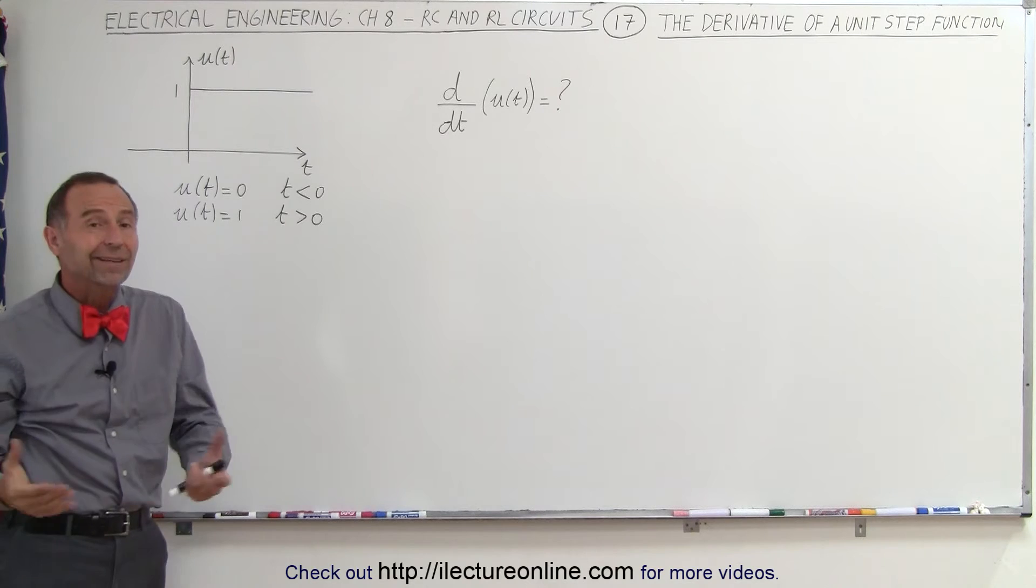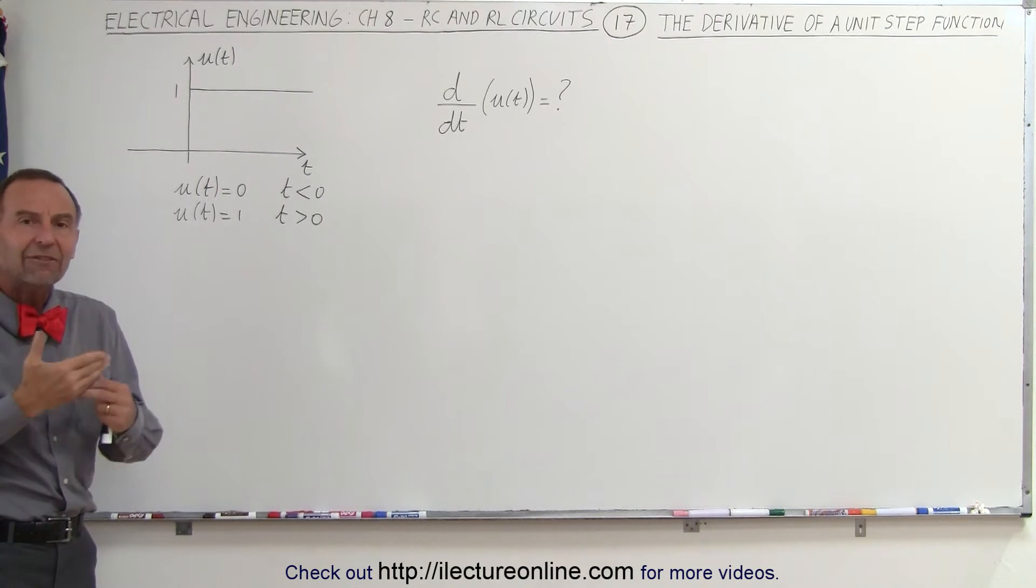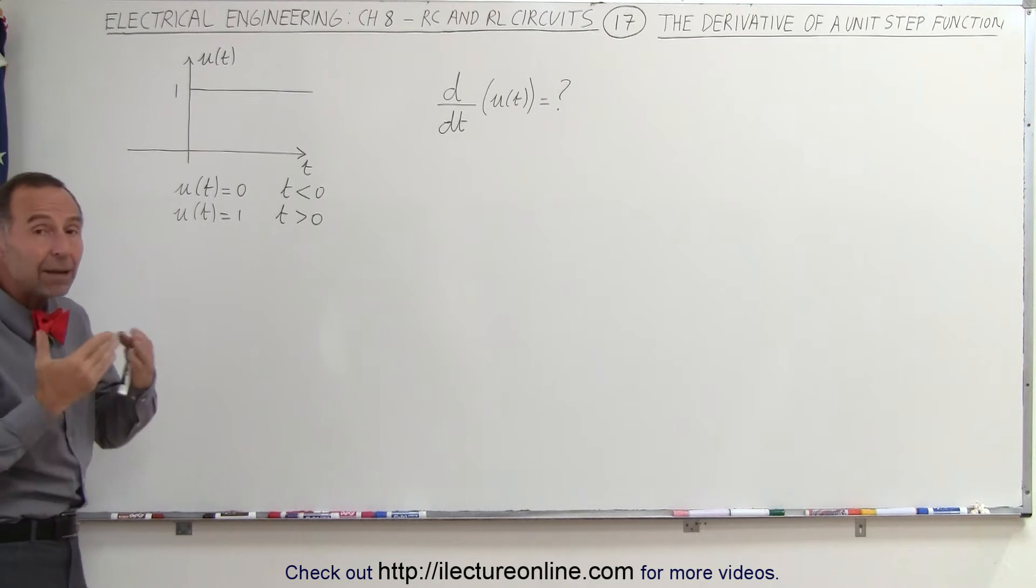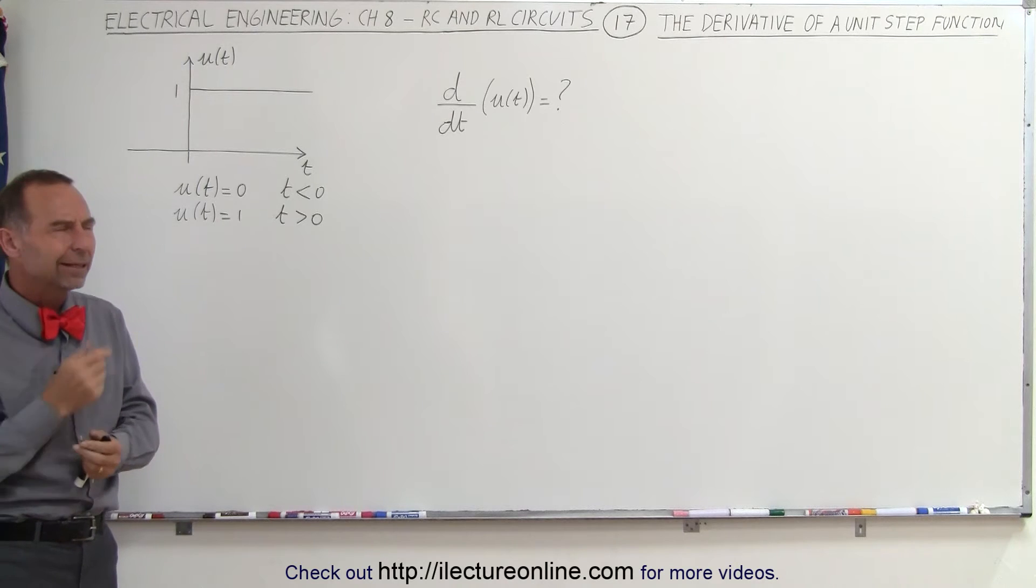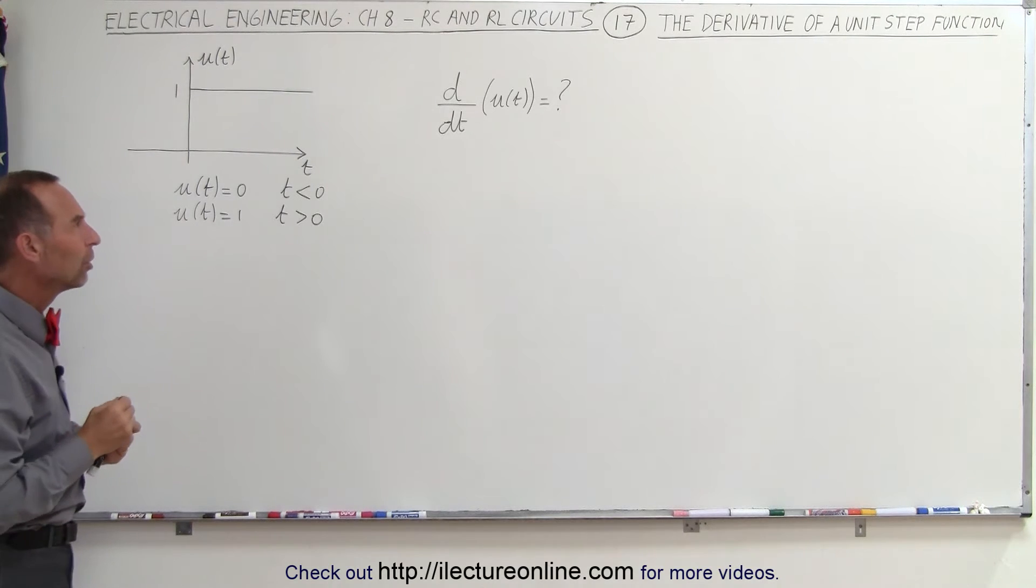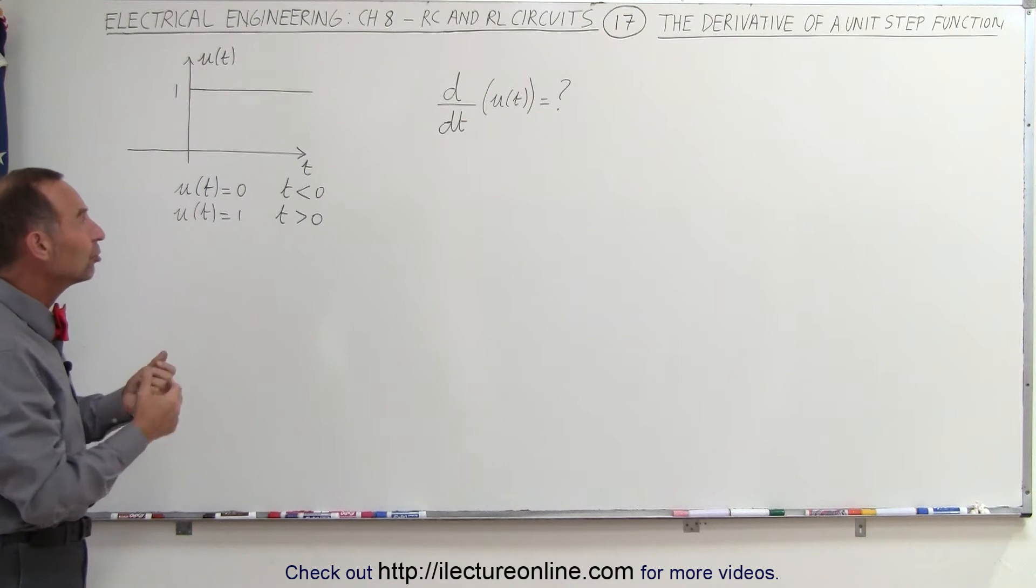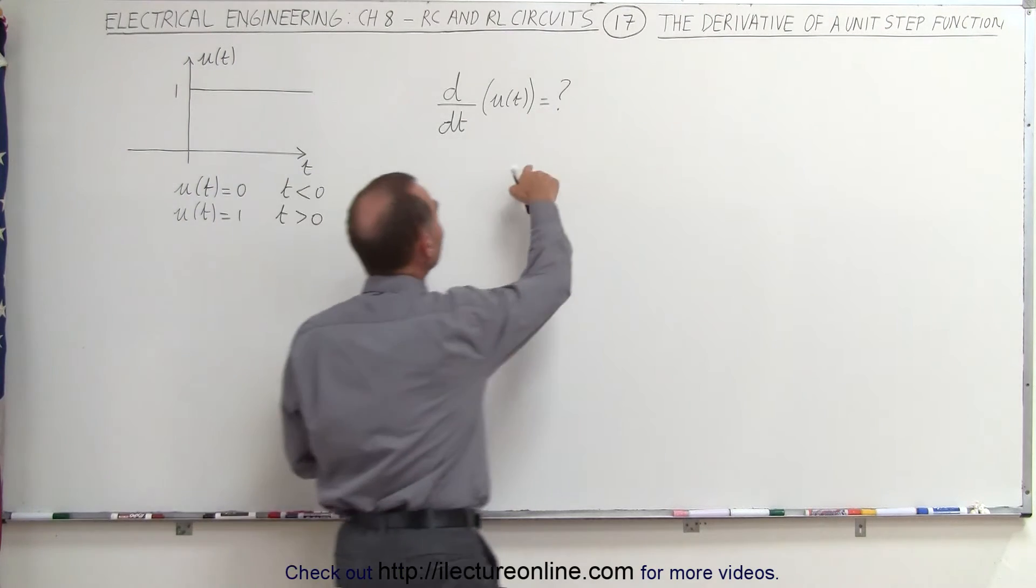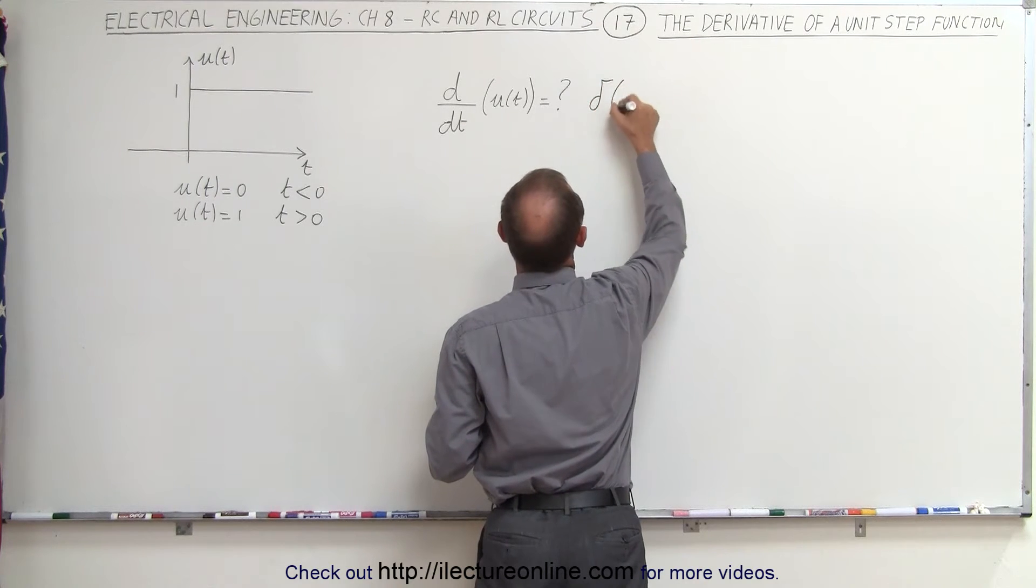Well, the change there is instantaneous, and so the slope then would have to be infinite. And the time duration over which the slope is infinite would be 0 in length. That's kind of a strange thing. So in order to be able to handle that, we've come up with a function. It turns out that this is equal to the delta function.